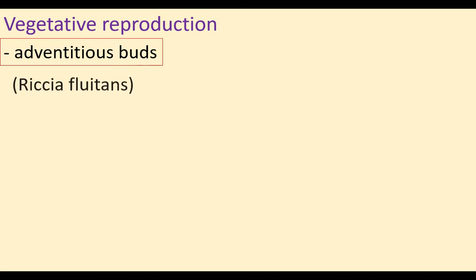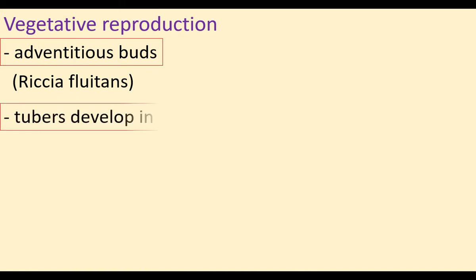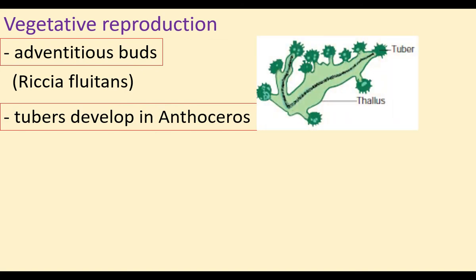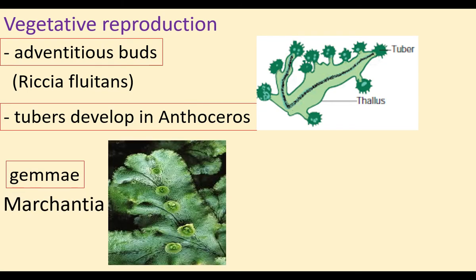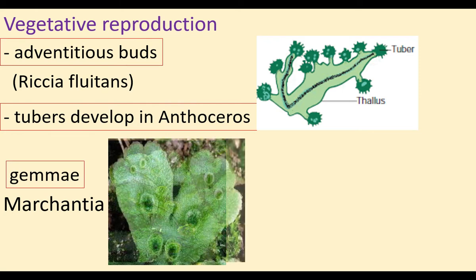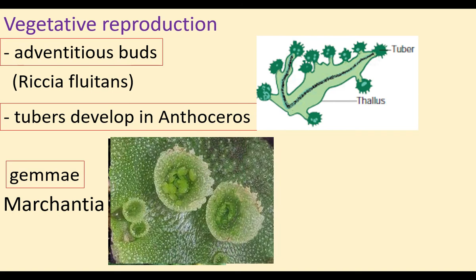There are different kinds of reproduction in bryophytes. In vegetative reproduction, adventitious buds are produced in Riccia fluitans, arising from the lower part of the thallus. Tubers develop in Anthoceros and grow into new thalli. Gemmae are found in Marchantia — these are cup-like structures (singular: gemma cup) that develop into new thalli.